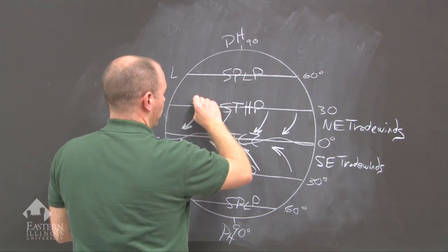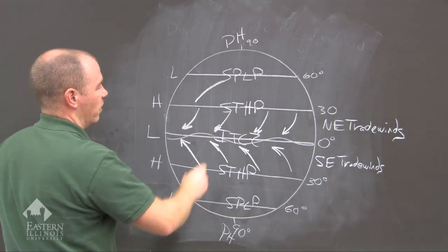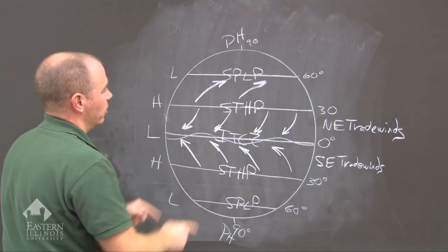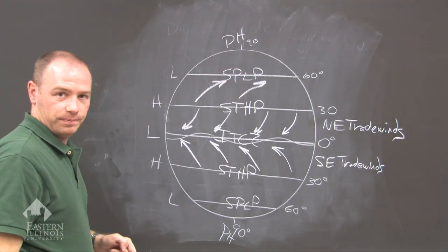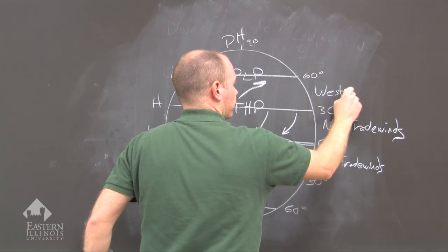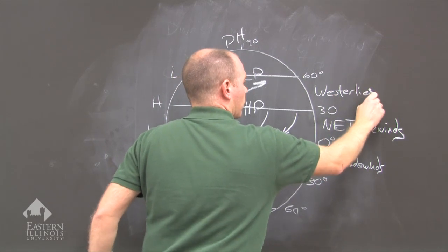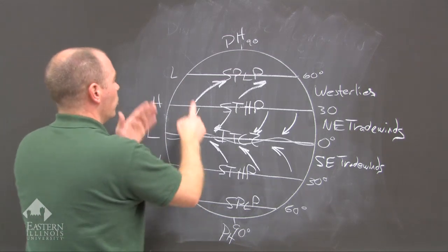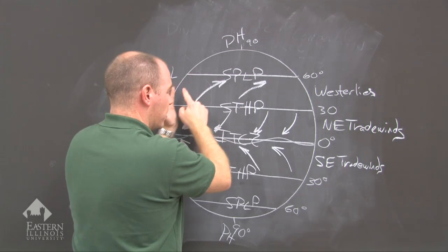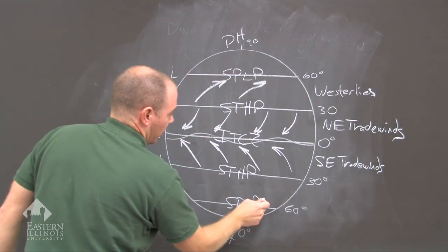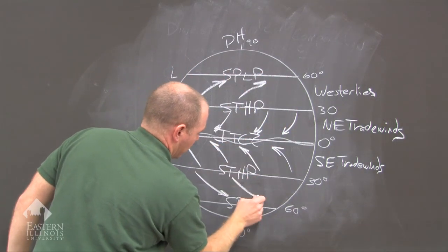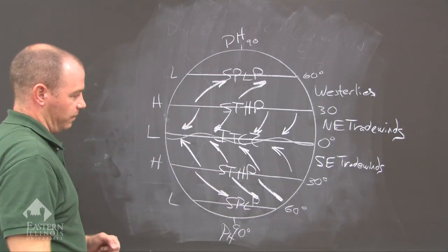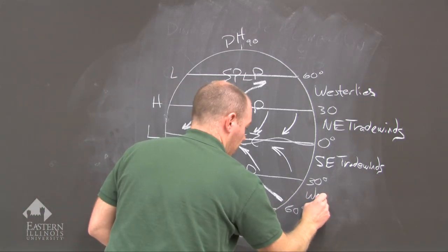In the northern hemisphere between 30 degrees north and 60 degrees north, we get another wind belt that goes from the subtropical high pressure to the subpolar low pressure. These are called the westerlies, and they bring us our weather — weather moves from west to east. In the southern hemisphere, it's a mirror image: from the subtropical high pressure to the subpolar low pressure, again called the westerlies.